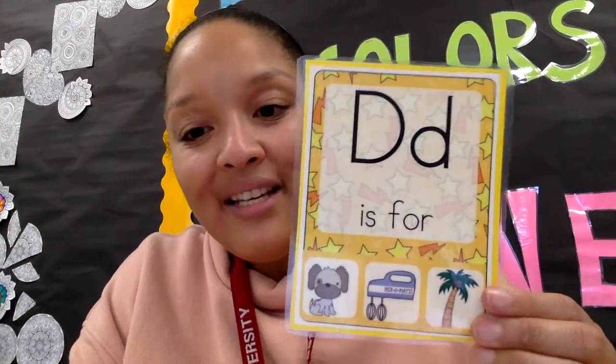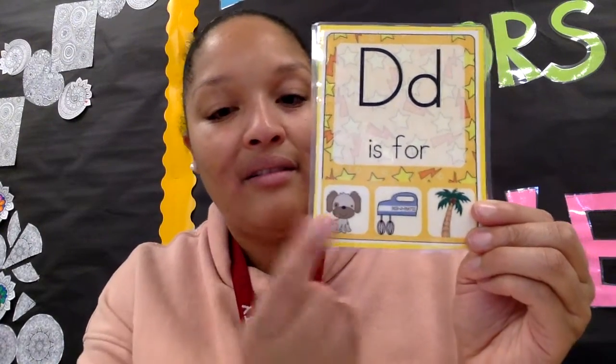We are on to our last card. What letter is this? Letter D. Letter D has the D sound. Which picture starts with the D beginning sound? D, d, Dog? Mm, mm, Mixer? T, t, Tree. Which picture starts with D? D starts — Dog. Dog has the D sound at the beginning.